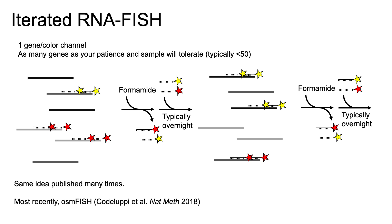What if you want to do more? The easiest thing is to just do this a bunch of times — take those same probes, strip them off your sample using formamide, high heat, or a variety of different methods, then restain with another set of probes and do another round of imaging against a different set of mRNAs. You can do this as many times as your sample and either you or your postdoc will tolerate, which usually means less than 50. Most recently, this was done in a paper from the Linnarsson lab, which I'll highlight to give you a sense of what this kind of data can generate.